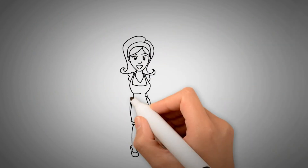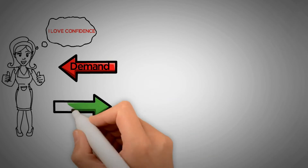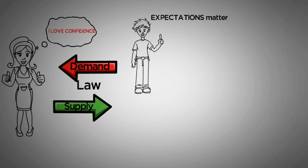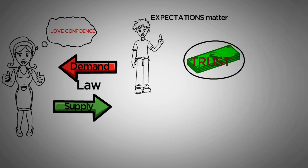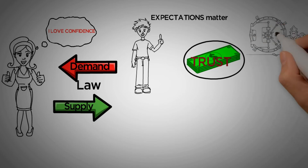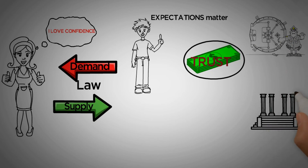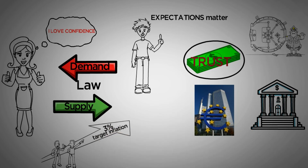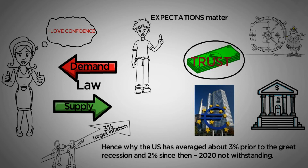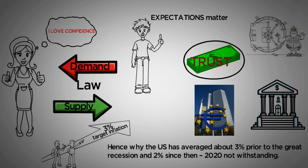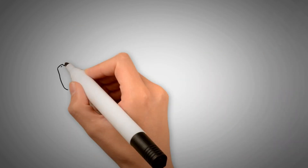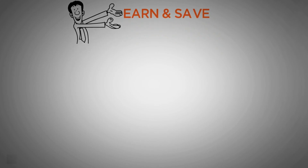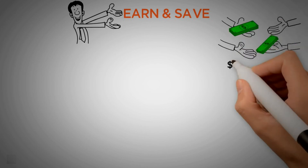Now, what is most important in this market is the confidence that a currency arouses. Depending on the confidence as well as the law of supply and demand, the value of the currencies will vary. Remember earlier when I said that expectations matter — the US dollar remains a strong currency because people's trust in that currency is strong. The institutions in charge of regulating foreign currencies are usually central banks, which are mostly national, although there are exceptions like the European Central Bank. Most governments set a target inflation rate because, generally, a small amount of inflation is considered good for an economy. Hence why the US has averaged about 3% prior to the Great Recession and 2% since then, 2020 notwithstanding. This is why finding a way to invest is so critical, because every year your $1,000 becomes worth only $980, give or take a little.